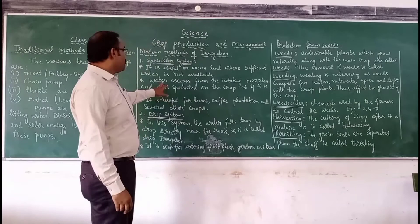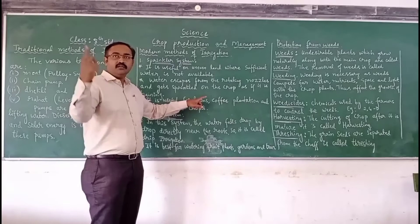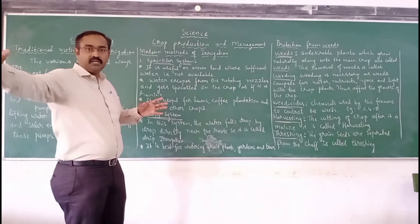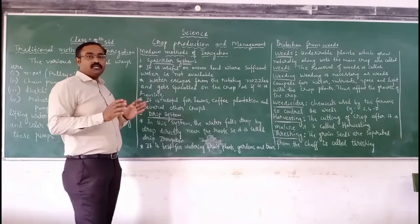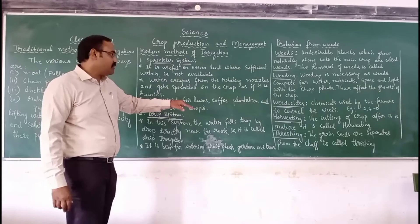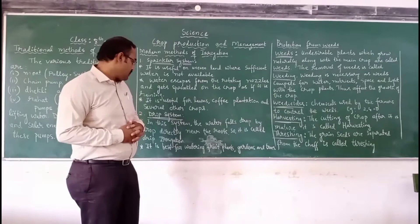Water escapes from the rotating nozzles, which keeps on rotating, and the water is sprayed to far places. At regular distances, these sprinklers are kept in a field, so it covers the whole field. Water is available for each and every patch. This method is useful for lawns, coffee plantations and also several other crops.